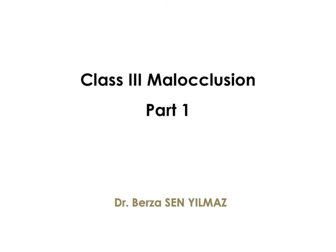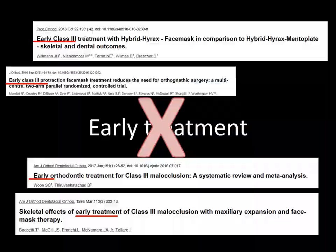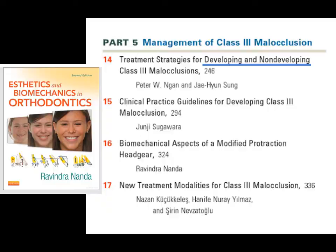In the first part of this webinar, we made an introduction to Class 3 occlusion and talked about the prevalence. Before talking about classification, it should be noted that the term 'early treatment' is often used in the literature. However, 'early' implies something done before the usual or expected time, which is why I don't prefer using that term. In the book edited by Dr. Nanda, the term 'developing' is used for growing patients by Dr. Negan and Sung. I personally prefer using the term 'treatment of developing Class 3 occlusion.'